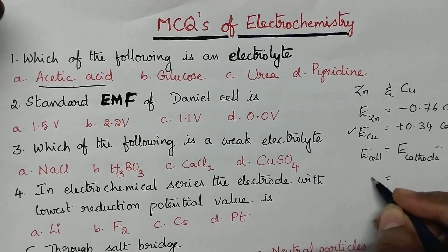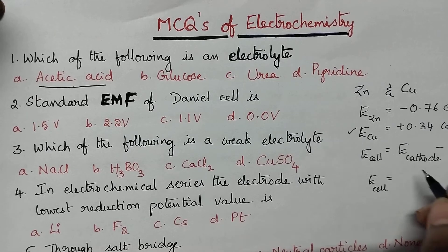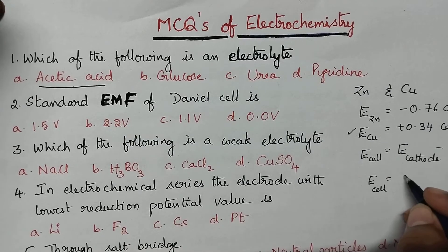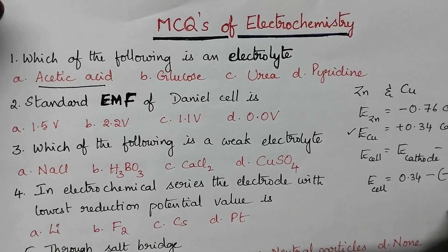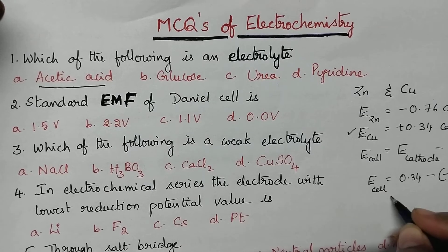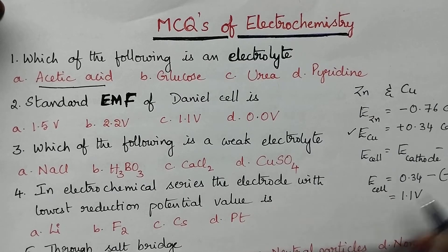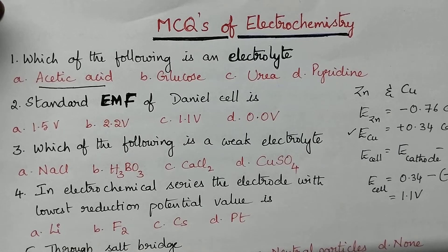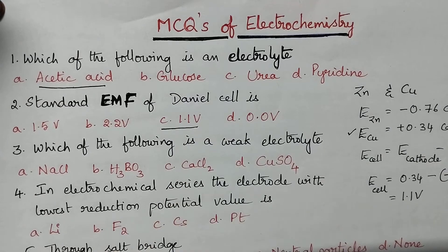Here, EMF of the cell equals E copper minus E zinc, that means 0.34 minus (−0.76), which equals 1.1 volts. So the EMF of Daniel's cell is 1.1 volts.